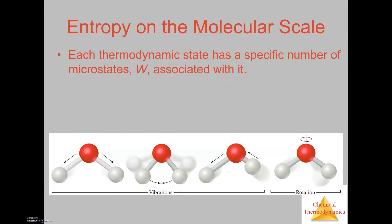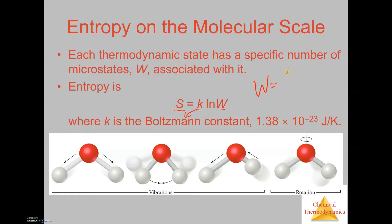Each thermodynamic state has a specific number of microstates. W is what represents a microstate, and entropy is represented by this equation where you have S (entropy) is equal to k (Boltzmann's constant) times the natural log of W, where W is represented by the number of microstates.